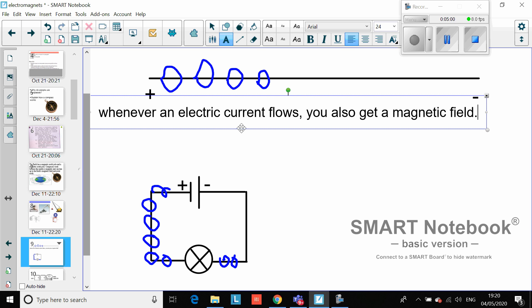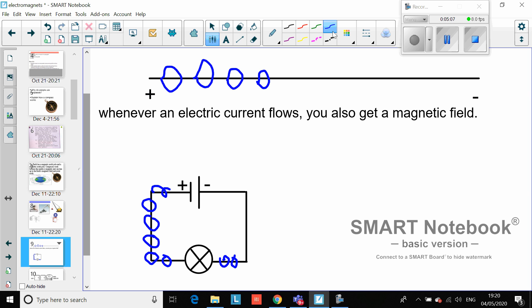First thing you need to do: can you copy this in and write something fairly straightforward like 'whenever an electric current flows, you also get a magnetic field.' Pause the video, draw this in, and you can add little arrows to show that it's flowing in a circle around like that. Your drawings are probably going to be much neater than mine.